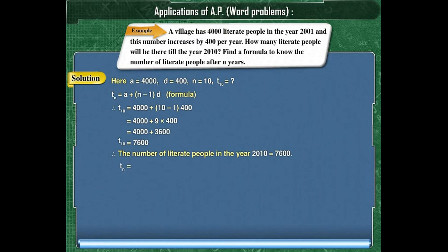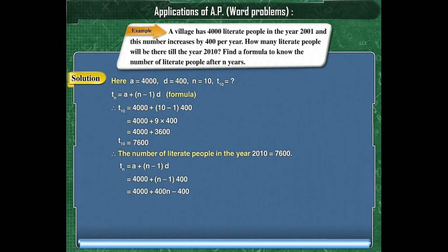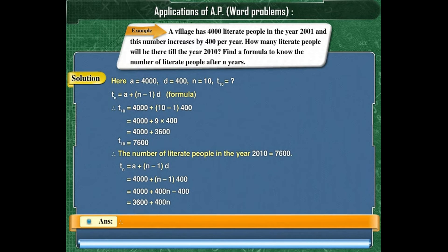Now let us find the formula to know the number of literate people after N years. TN = A + (N − 1) × D. Substituting the given values, we get TN = 4,000 + (N − 1) × 400. On simplifying, we get TN = 3,600 + 400N. Therefore, the formula to find the number of literate people after N years is 3,600 + 400N.